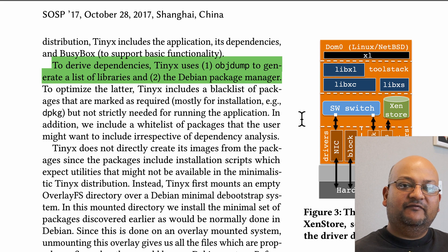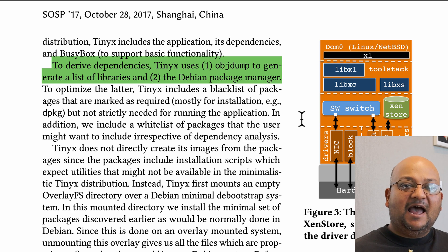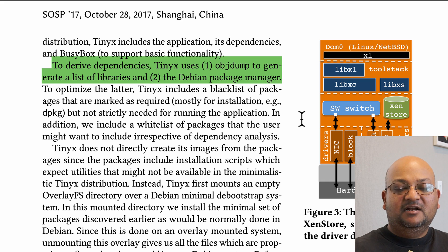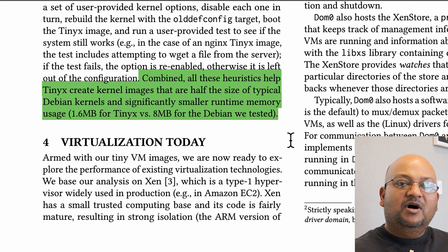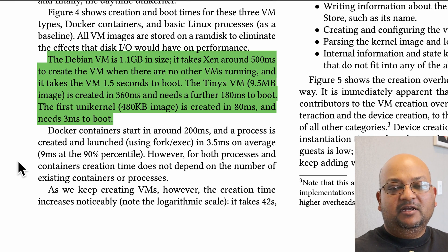At a high level, what TinyX does is take a specification of all the dependencies for a particular application you want to run in the virtual machine. These dependencies come in the form of a list of libraries and Debian packages that your application depends on. It then constructs a virtual machine and an optimized Linux kernel that is just enough to run your specific application. This lets them construct virtual machines much smaller than typical Debian guest OS virtual machines, and the VM constructed by TinyX sits in between a full-fledged guest operating system and a unikernel.